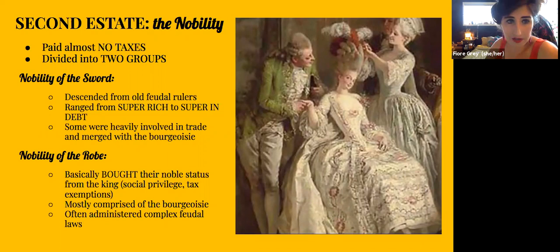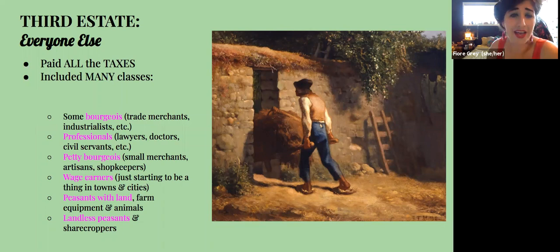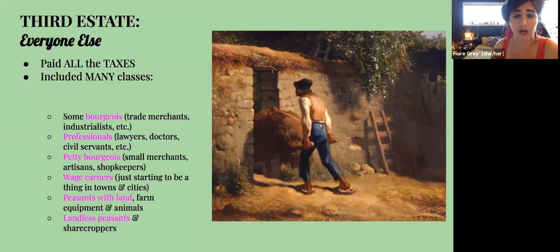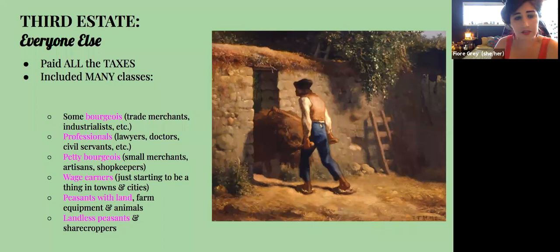The third estate was everyone else — they paid all the taxes. It included many different classes: the bourgeois such as trade merchants and industrialists; professionals like lawyers, doctors, and civil servants; the petty bourgeois — small merchants, artisans, shopkeepers — who had a much bigger impact at that time than today; wage earners starting to crop up in towns and cities; and peasants ranging from those with land and equipment who were fairly well off, all the way down to landless peasants and sharecroppers who were abjectly poor.